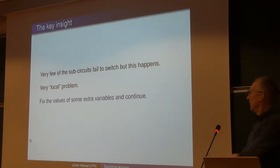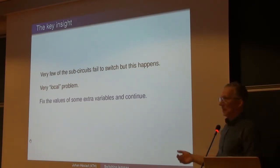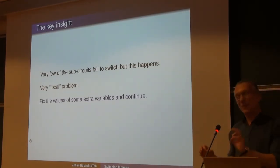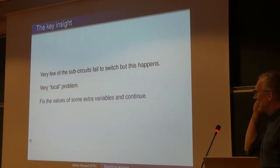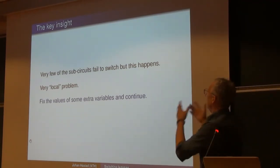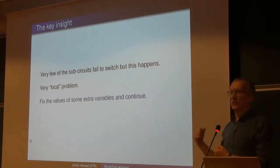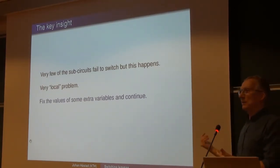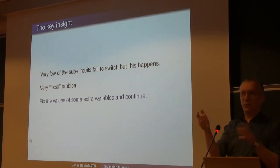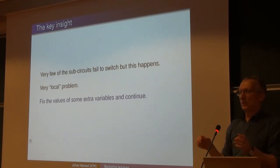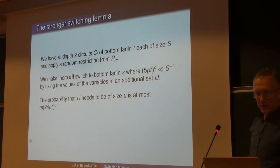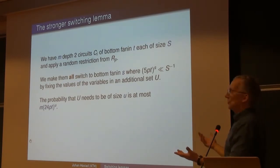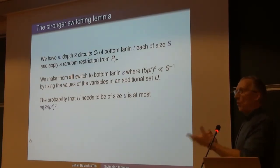At some workshop someone mentioned they were trying to prove slightly better lower bounds and got some strange expression. I started thinking about it. You can't avoid having some sub-circuits that don't switch, but if you look closely it's a very local problem — just one circuit that happens to have one big AND gate. So you assign values to the variables that turn up during the proof and prove a stronger switching lemma: you can almost switch, and when you fail, it just adds a few values to a few more variables.